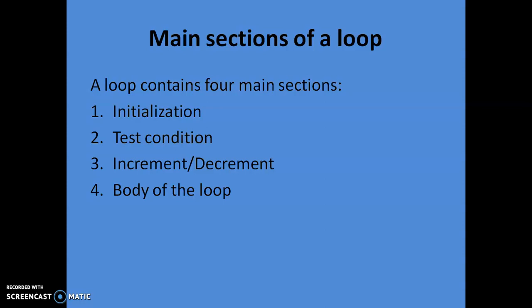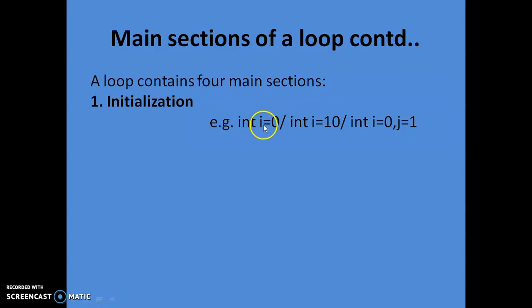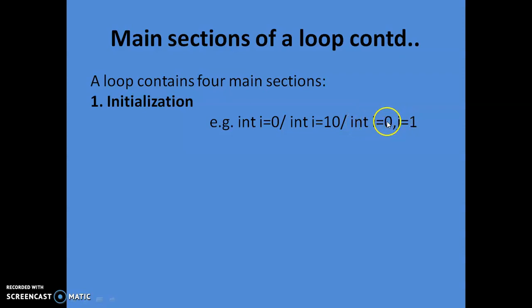Let's see examples of each of them. Initialization is something like declaring a variable i of type int and initializing it with zero, depending on our requirement. We can initialize it with 10, or we can initialize multiple variables as well, like i and j, with the same or different values.